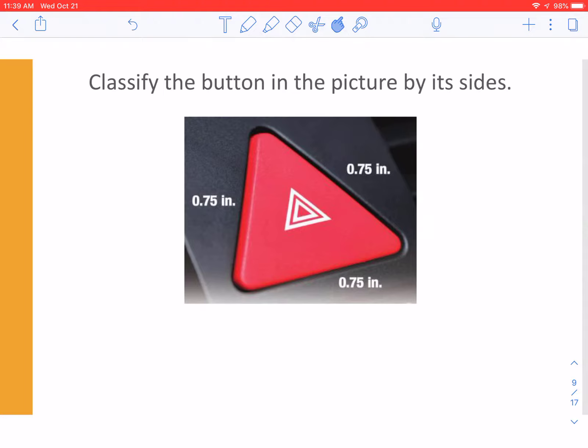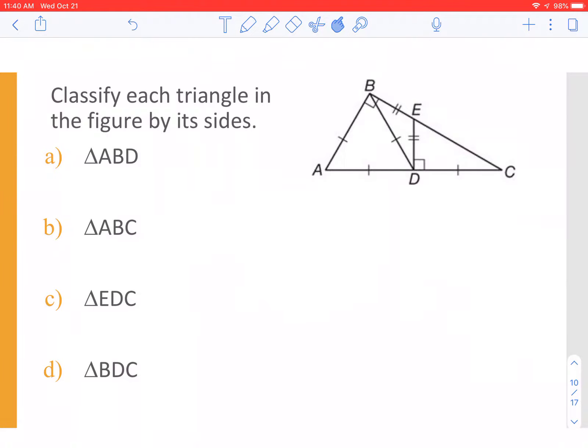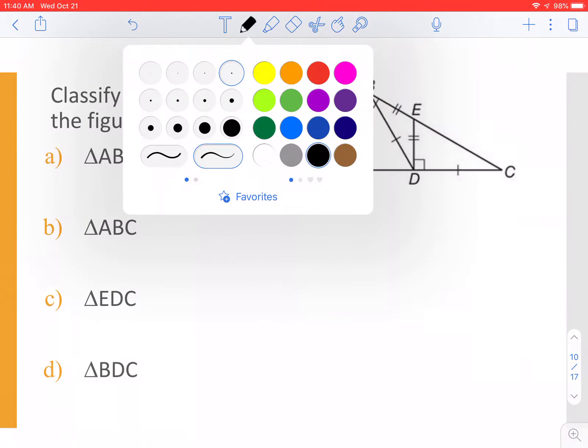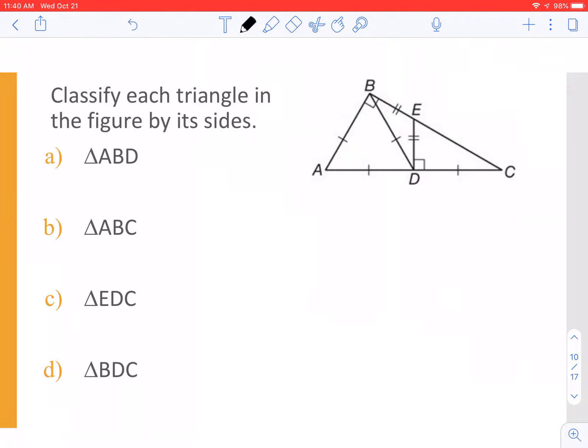Let's look at this here. Let's look at my three sides. I have 0.75. They are all the same. So I would say equilateral. Now we're going to classify each triangle by its sides. What I'm going to do to help you see it better is I'm going to highlight each triangle. First one is ABD. So if I outline that, I can see that all three sides are the same, so that would be an equilateral.